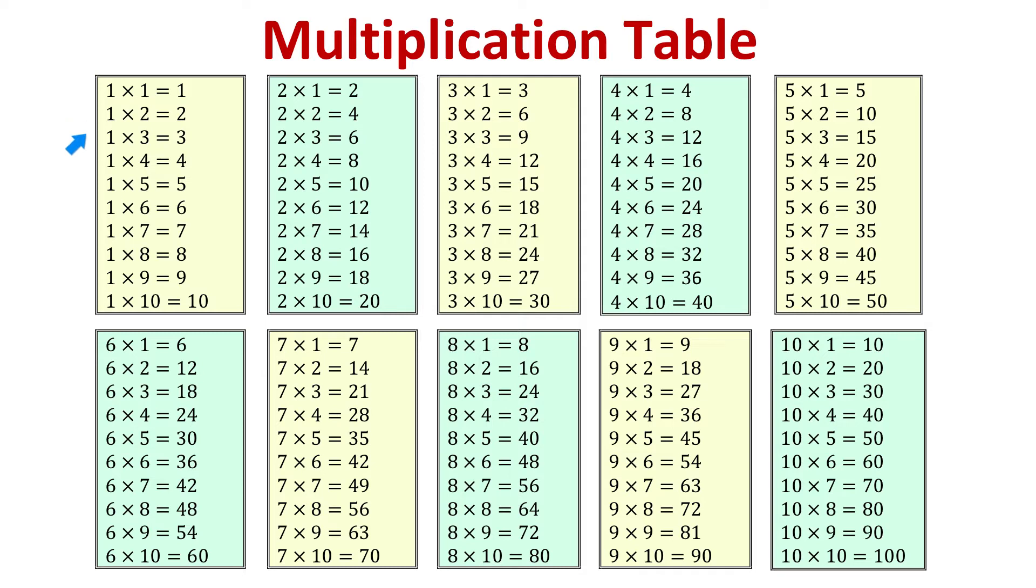When we multiply a number by one, we always get the same number. For example, 1 times 4 is 4, 1 times 5 is 5, and so on.